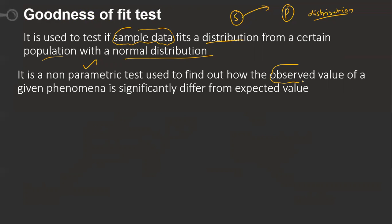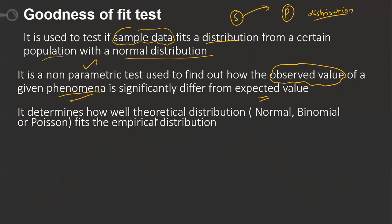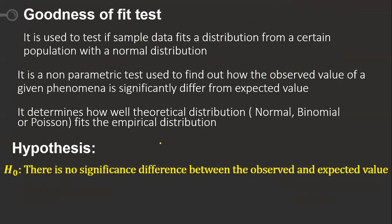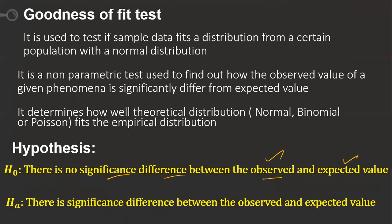The test determines how well a theoretical distribution — normal, binomial, or Poisson — fits the empirical distribution. The null hypothesis states: there is no significant difference between the observed and expected values. The alternative hypothesis states: there is a significant difference between the observed and expected values. We select alpha as 0.05.